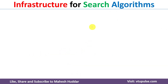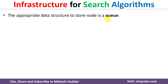Whenever we apply a search algorithm, we need to store these nodes somewhere. When we use BFS algorithm, we store nodes in a FIFO queue. When we use DFS algorithm, we store nodes in a LIFO queue. When we use uniform cost search, A* search, or greedy search algorithm, we store nodes in a priority queue. So the best data structure to store nodes is the queue — either FIFO, LIFO, or priority queue depending on the algorithm.